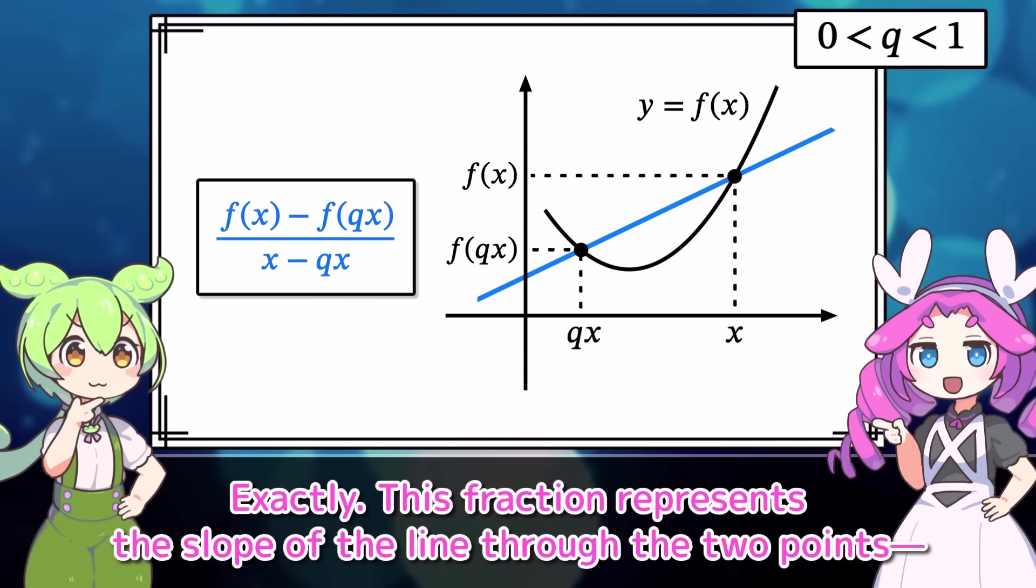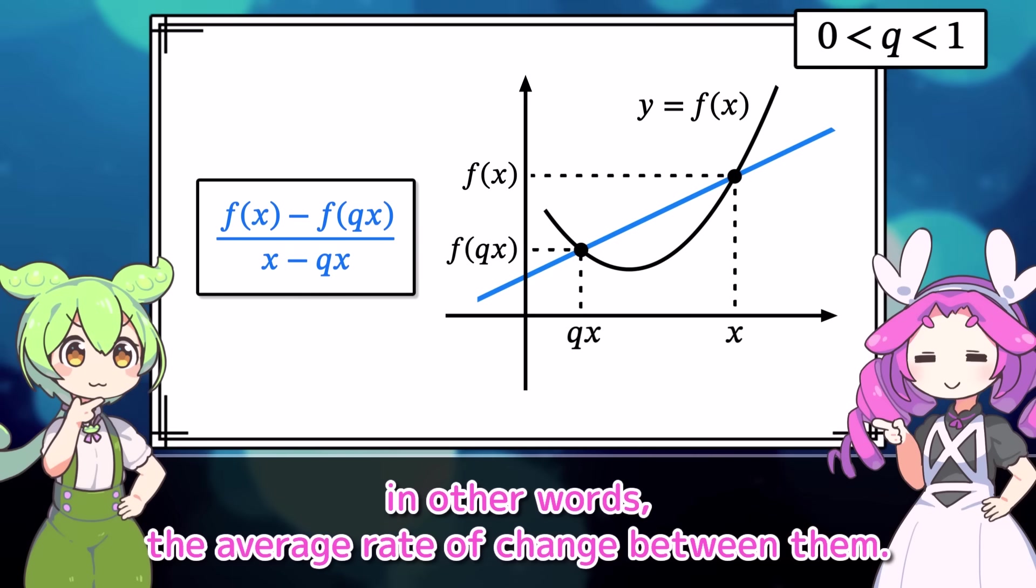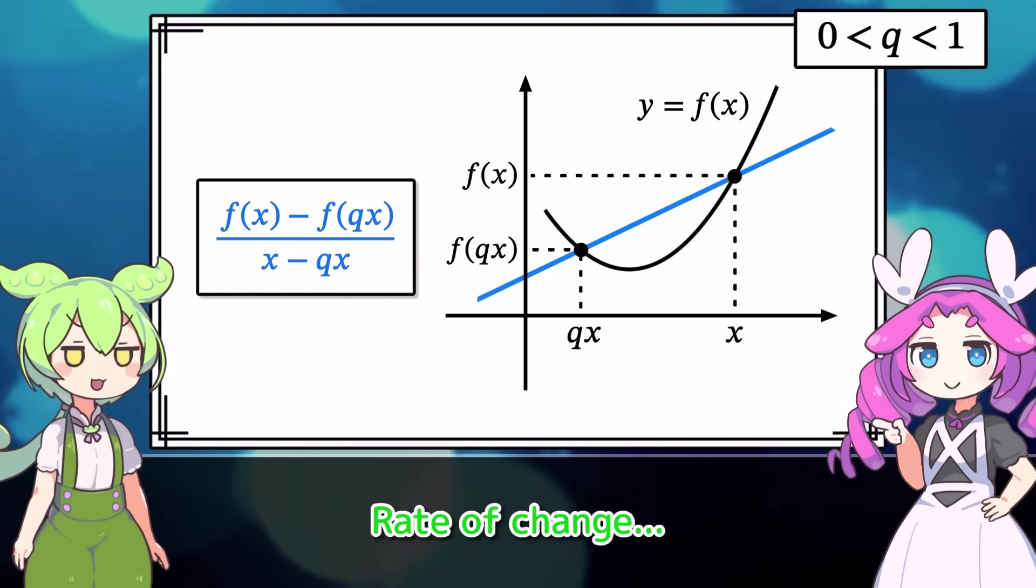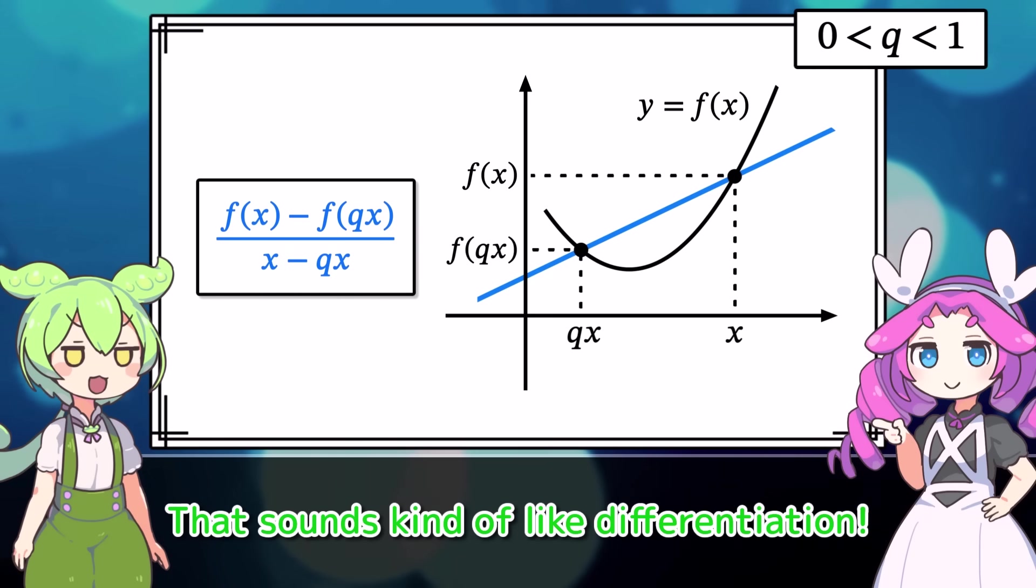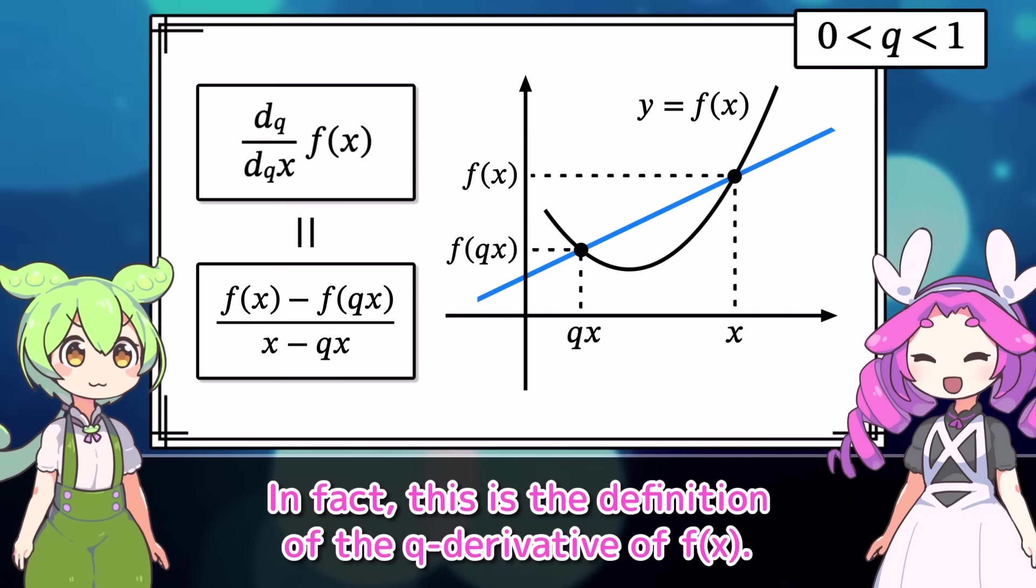If we look at the ratio of the changes between the two points, the change in the x direction is x minus qx, and the change in the y direction is f of x minus f of qx. Exactly. This fraction represents the slope of the line through the two points. In other words, the average rate of change between them.